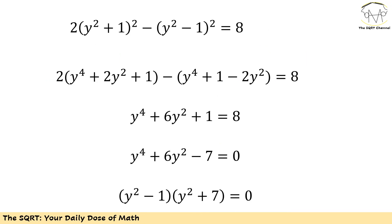Now I'm going to continue to simplify it further. For the first term, I'm going to just take power of 2 of each term and write it as y^4 + 2y^2 + 1. For the second term, I'm going to use the same approach. Here I'm going to end up with y^4 + 1 - 2y^2. Now after applying some simplification, I will end up with y^4 + 6y^2 - 7 = 0.